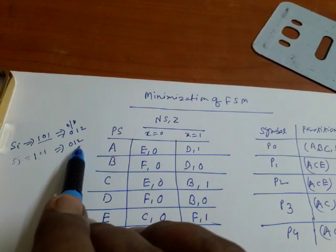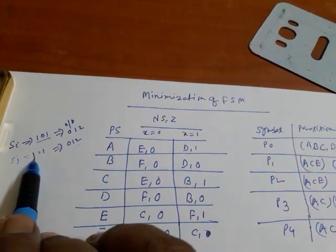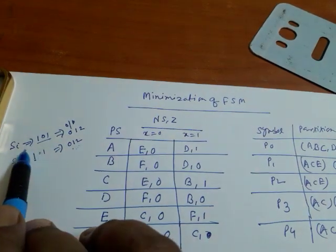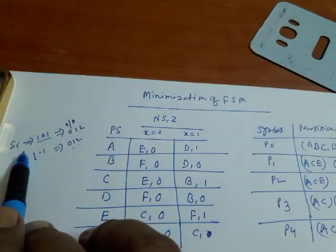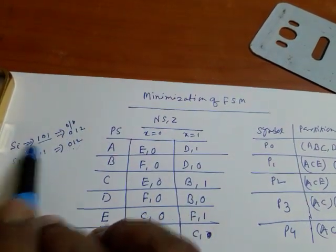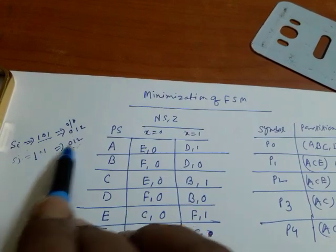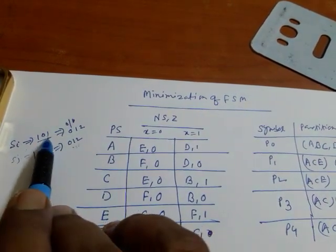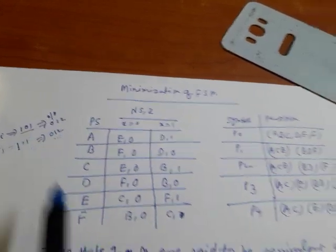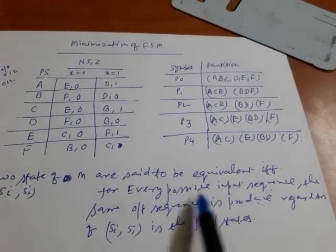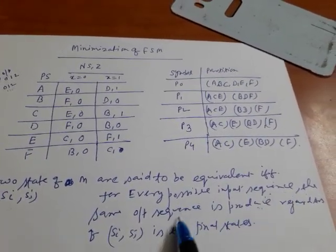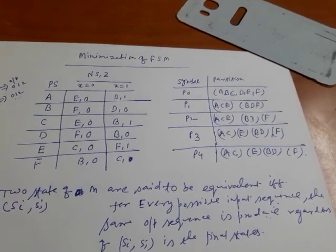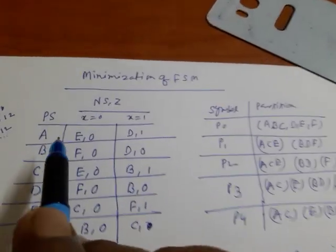You can see that if I apply 1 to sj it produces 0, and if I apply 1 to si it also produces 0. For input 0 both produce 1, and for input 1 both produce 2. So for every possible input sequence the same output sequence is produced, meaning the states are equivalent.